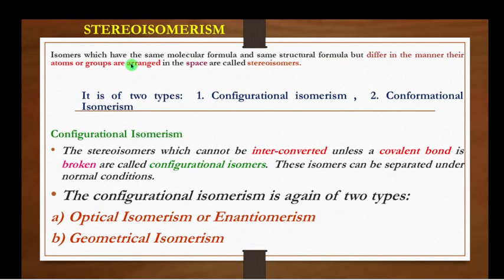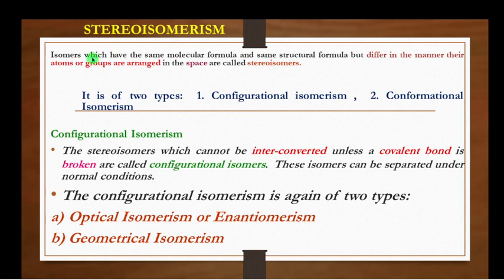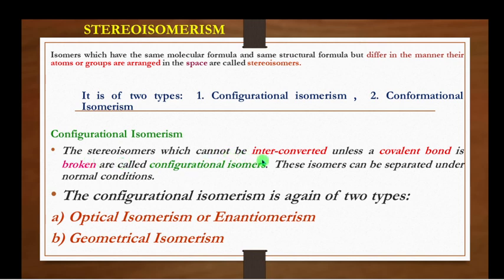Conformational stereoisomerism is classified as rotational isomerism and imine inversion. Now we will see about stereoisomerism. Isomers have the same molecular formula and may have the same structural formula but differ in the manner the atoms or groups are arranged in space — such isomers are called stereoisomers. Stereoisomers having the same molecular formula and same structural formula but differing in the arrangement of their atoms or groups are classified as configurational and conformational isomers. Configurational isomers cannot be interconverted unless a covalent bond is broken, and these isomers can be separated under normal conditions.